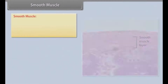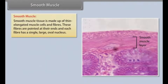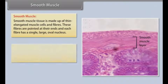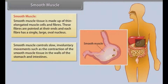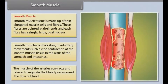Smooth muscle tissue is made up of thin, elongated muscle cells and fibers. These fibers are pointed at their ends, and each fiber has a single large oval nucleus. Smooth muscle controls slow, involuntary movements, such as the contraction of smooth muscle tissue in the walls of the stomach and intestines. The muscles of the arteries contract and relax to regulate blood pressure and the flow of blood.